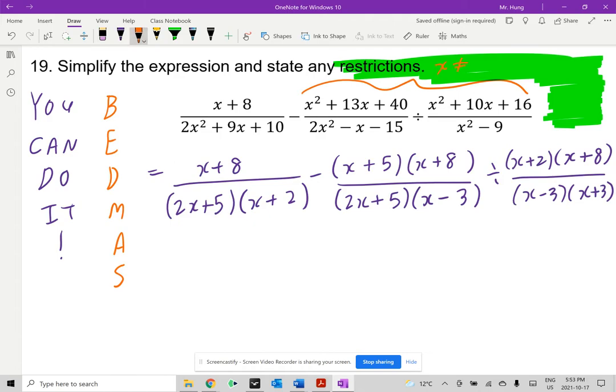x cannot be what? Well, from this first denominator, x can't be negative 5 divided by 2. From x plus 2, this means x plus 2 cannot be 0, so x cannot be negative 2. 2x plus 5, we did this already. x minus 3 cannot be 0, x cannot be 3. x minus 3, we just did, x plus 3 cannot be 0, so x can't be negative 3.